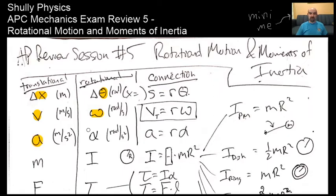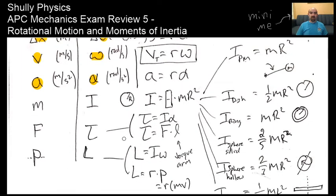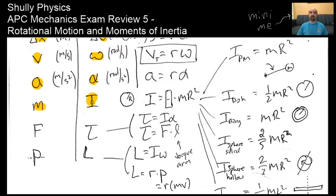Moving on to acceleration in meters per second squared, there's angular acceleration in radians per second squared. Also, coming up especially in the next session and at the end of this one, we're going to be looking at the rotational analog of mass, which is rotational inertia or moment of inertia I. Instead of F for force, there's tau for torque.